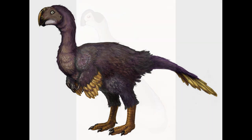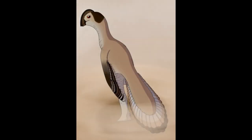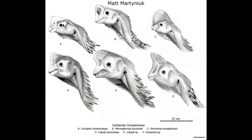All of these dinosaurs are of a similar size, roughly two meters long, and must have inhabited different ecological niches. The fact that three distinct lineages of oviraptorids have been found at the same site indicates that these animals were continuing to undergo a significant diversification event at this time.